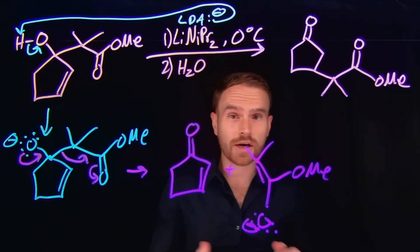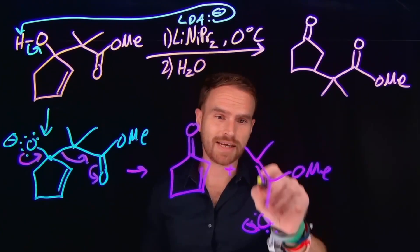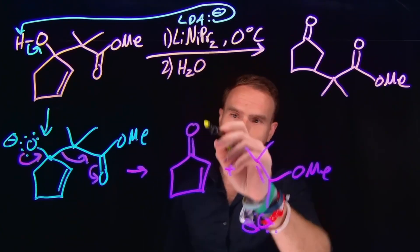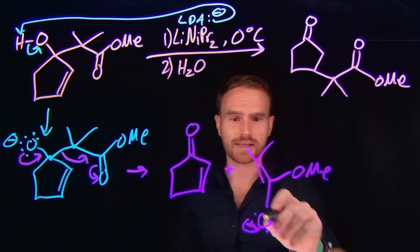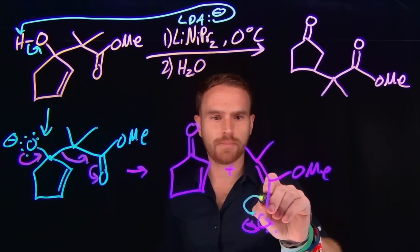And from here, we can do a conjugate addition because we have this enolate species and an alpha beta unsaturated ketone. So we can do a one, four conjugate addition where these electrons will come down,